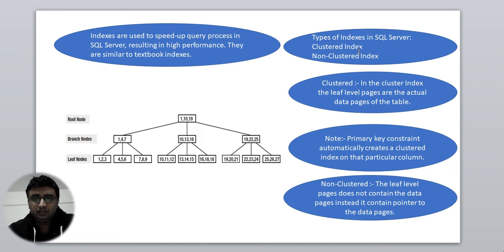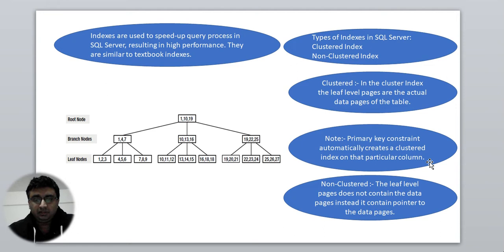In SQL Server, we have two types of indexes: clustered and non-clustered. For the clustered index, the leaf-level pages are the actual data pages of the table. I'll explain what leaf-level pages are shortly. Note that a primary key constraint automatically creates a clustered index on that column, and only one clustered index can be created per table.